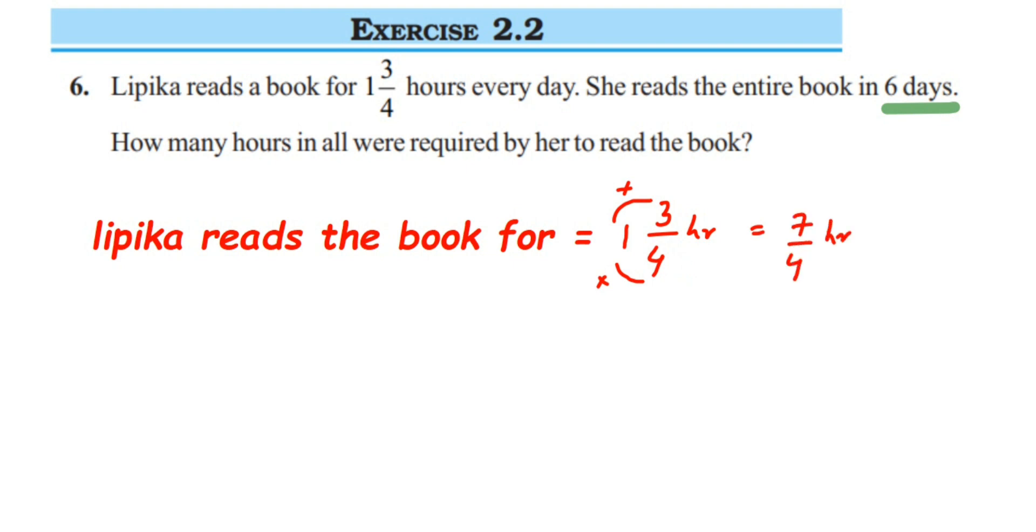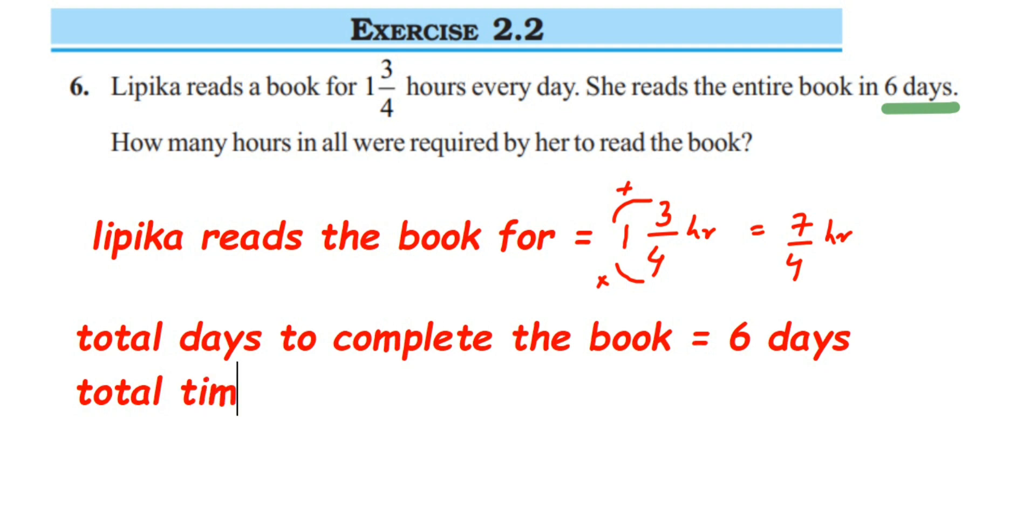Total days to complete the book is 6 days. Now we find the total time in hours. Total time to finish the book equals 6 × 7/4, because she read for 6 days and spent 7/4 hours each day.